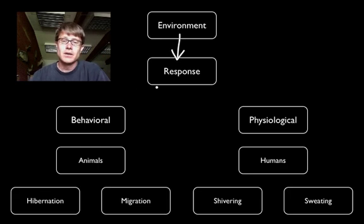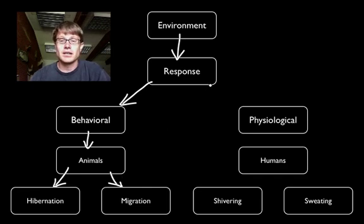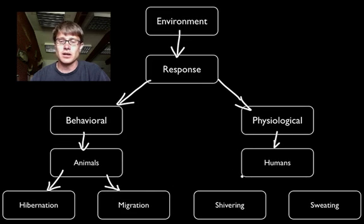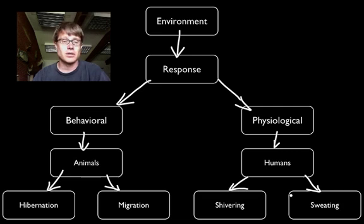A lot of animals on our planet have to survive organisms with changing environments, and they do that through two types of responses. The first type is behavioral — examples include hibernation and migration, which are responses to changes in temperature. Physiological responses are changes within an organism itself, such as shivering and sweating in humans to keep ourselves warmer or cooler.